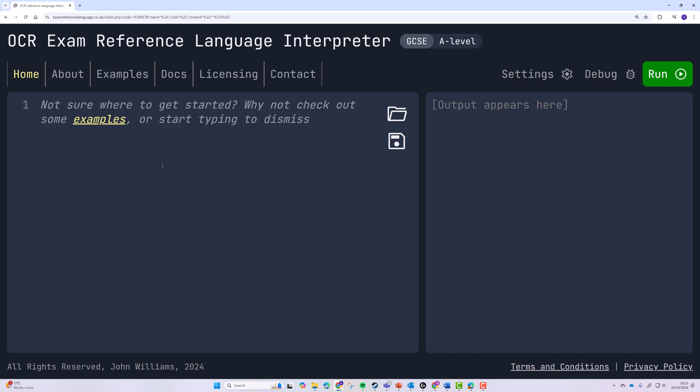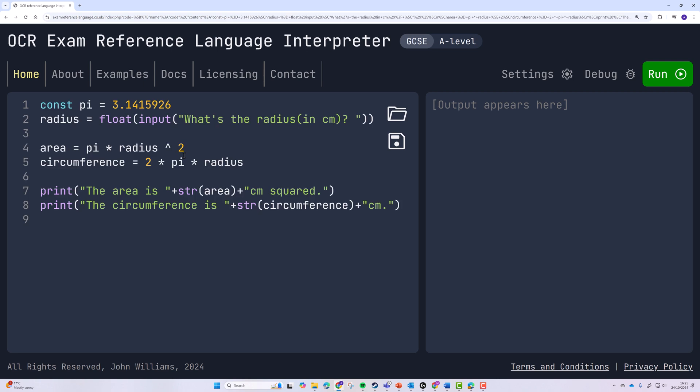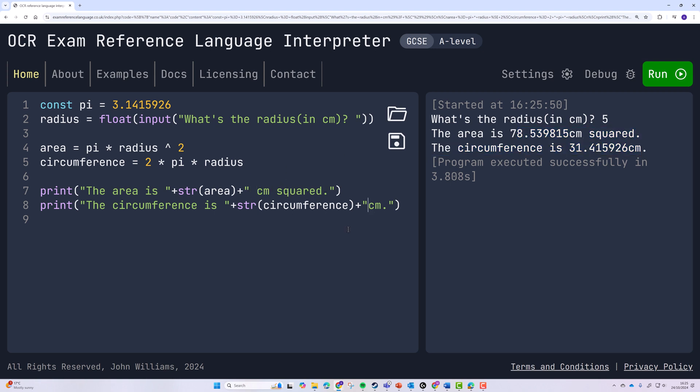This code here is exam reference language code. This website I've shown briefly before, but it's a really good website for testing your code. Because ERL is made up, we can't really run it in a normal IDE. So this one here is a good way of running it, and pretending like this is a real language. So I run the code, I type in a number, I press enter, and it gives us a result. Perhaps I should probably add space here. But if I run it again and type in a different number, we get different outputs. But ultimately, the same lines are running every single time.